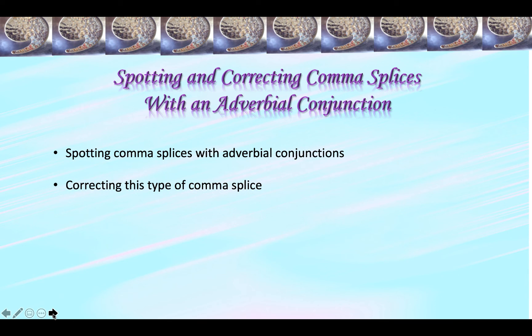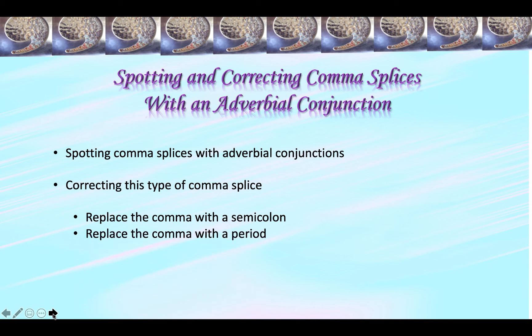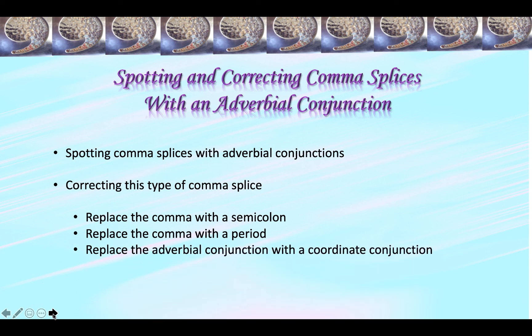There are three ways to correct this type of comma splice. The easiest is to replace the comma before the adverbial conjunction with a semicolon. Another way is to replace the comma with a period and capitalize the first word of the independent clause to the right, making it a new sentence — though again, that eliminates the close connection between the ideas. Finally, you can replace the adverbial conjunction with a coordinating conjunction and keep the comma, because two independent clauses can be connected by a comma and a coordinating conjunction: AND, BUT, OR, FOR, NOR, SO, YET.